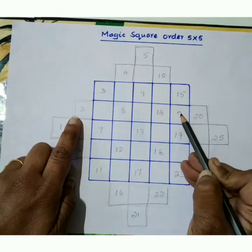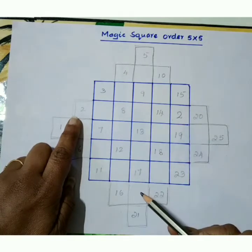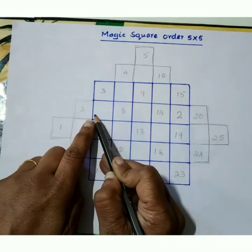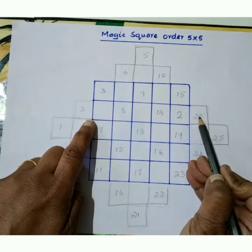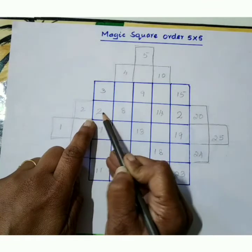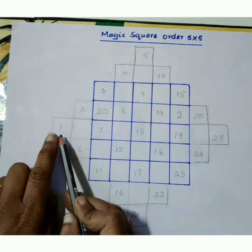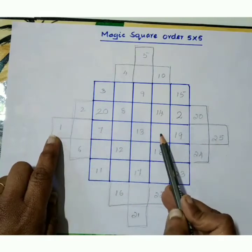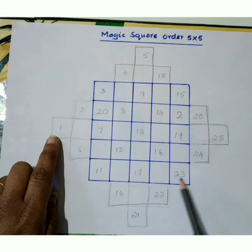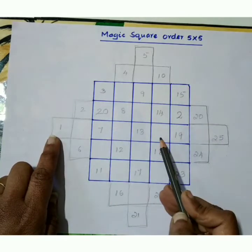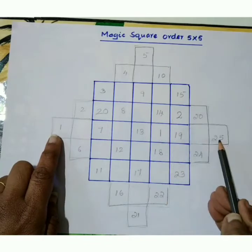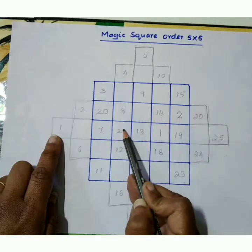Similarly, right to left, row end empty box is this one. Shift this number to here. Next, in this row, row end empty box is located inside the 5 into 5 order box. So here row end box is this one. Mention one. And similarly, right to left, shift this 25 to here.